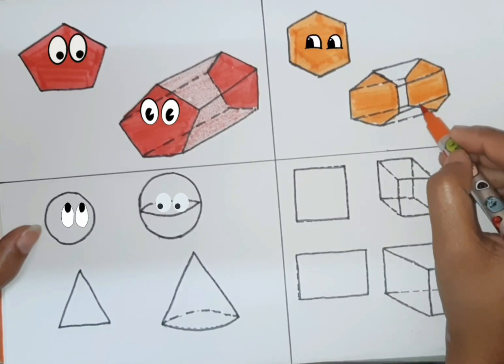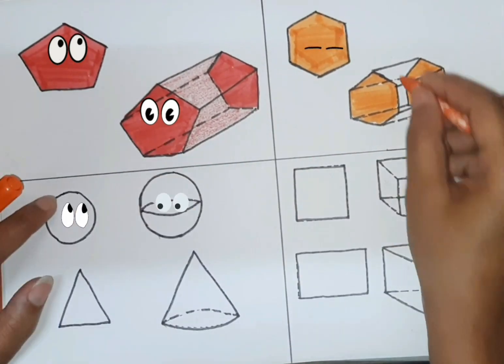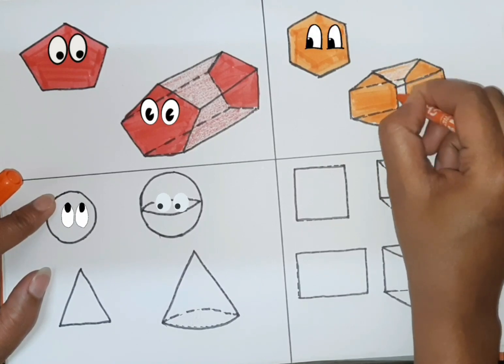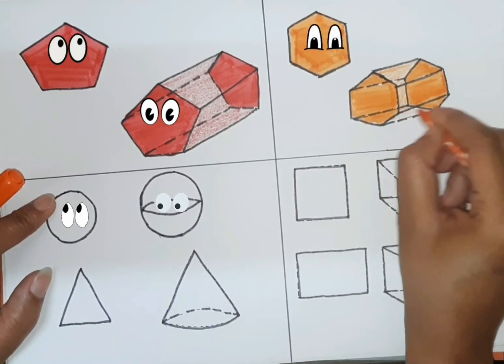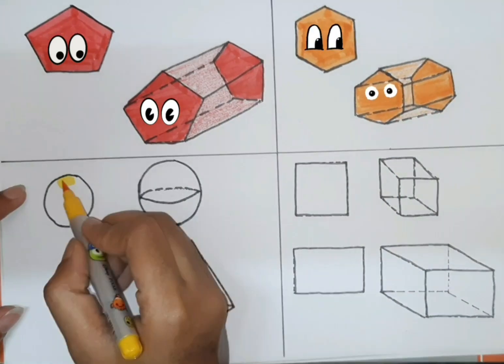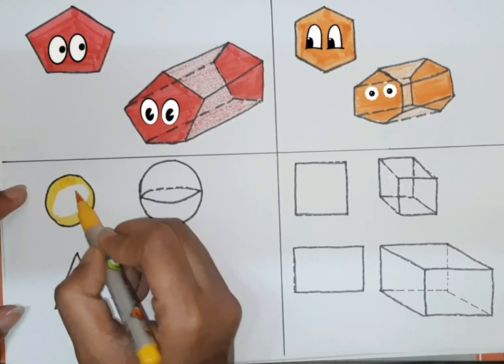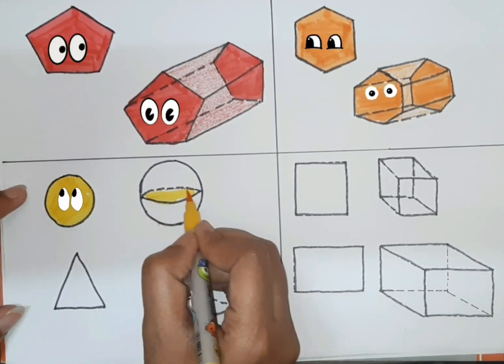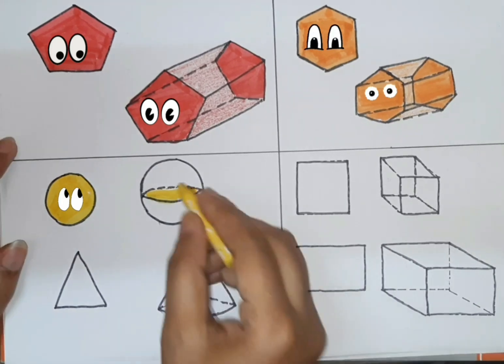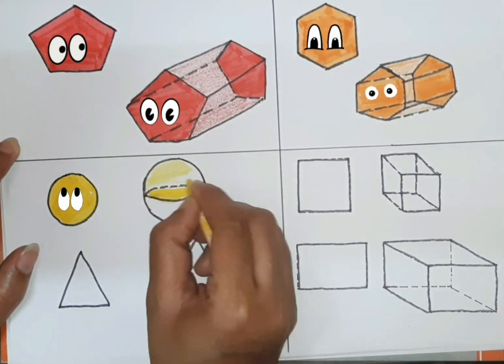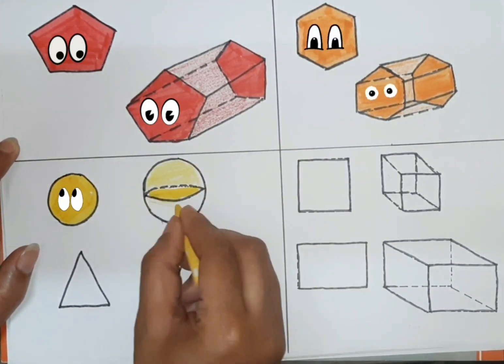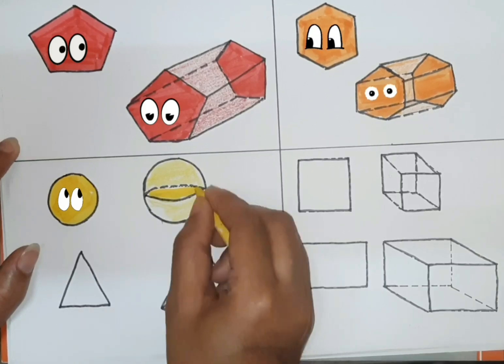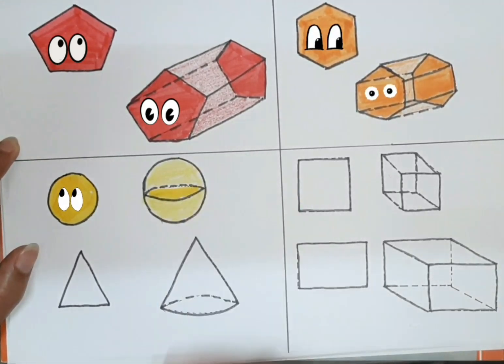Yellow color, third color of rainbow. Filling the sphere shape with the yellow color.